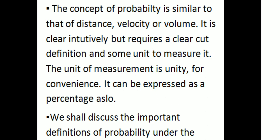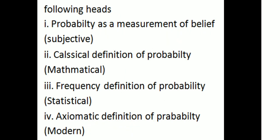We shall discuss the important definitions of probability under the following heads: first, probability as a measurement of belief — the subjective definition; second, the classical definition of probability — the mathematical definition; third, the frequency definition of probability — the statistical definition; and fourth, the axiomatic definition of probability — the modern definition.